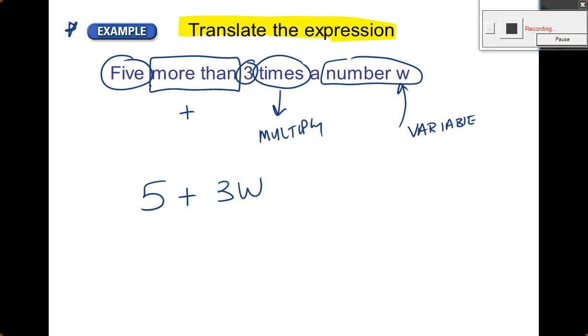Five plus three W. Could I have also written this? Is that the same thing? Is it exactly the same thing? Yes. Okay. So both of these would be considered correct. And in this case, either one of those would be fine. Right? So it says five more than.